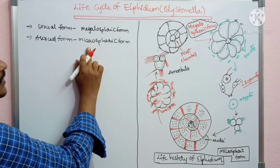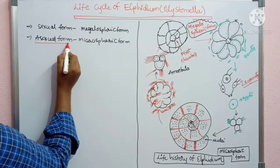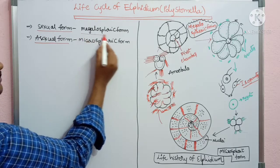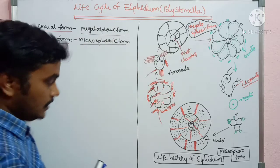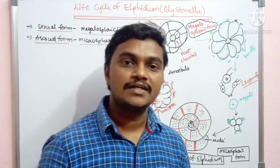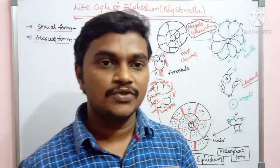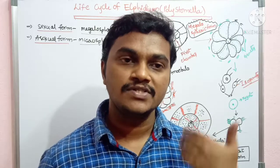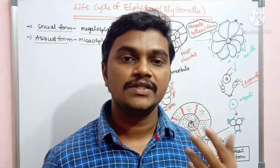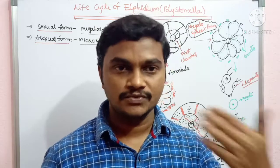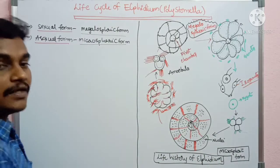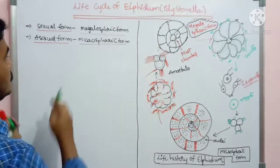Looking at the two forms: one involves sexual reproduction and the other involves asexual reproduction. In this life cycle of Elphidium, you can see the alternation of generations. In alternation of generations, the asexual reproduction form produces the sexual reproduction form, and the sexual reproduction form produces the asexual reproduction form — so you can see these alternate forms. This type of life cycle is called alternation of generations.